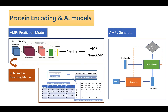In our AMP prediction model, we use PC6 to encode proteins. PC6 is a protein encoding method we developed. It converts the amino acids of a given protein into six physicochemical properties. Then, the protein will be processed through a hidden layer, and it will output the prediction result, which will be AMP or non-AMP.